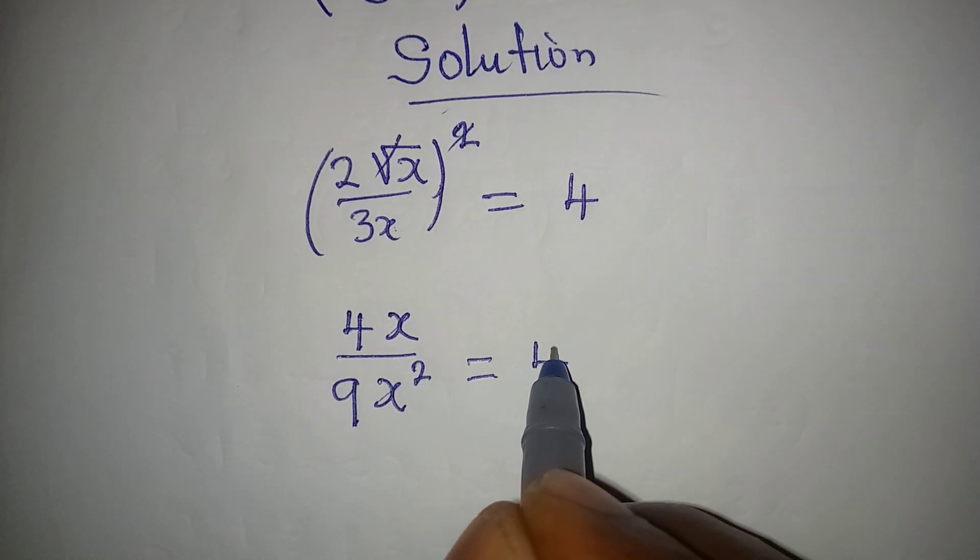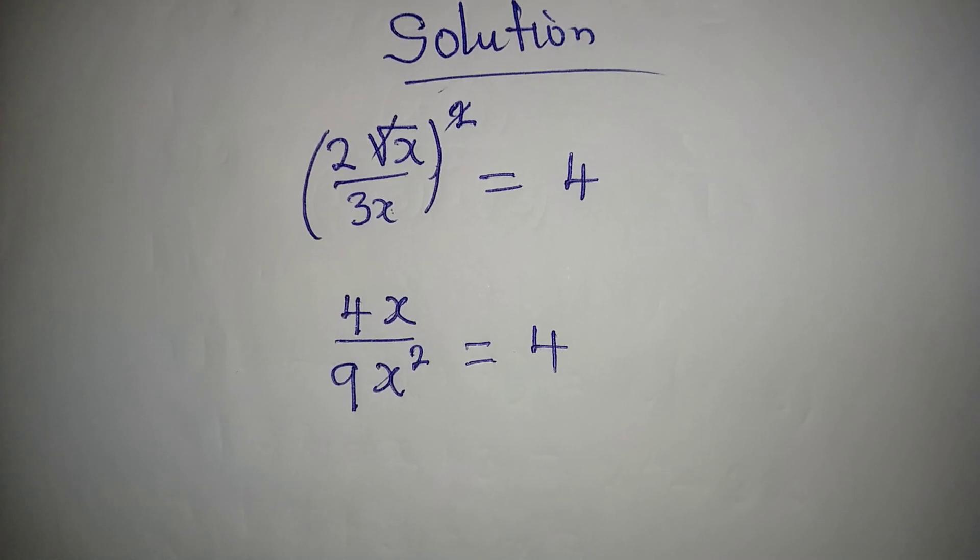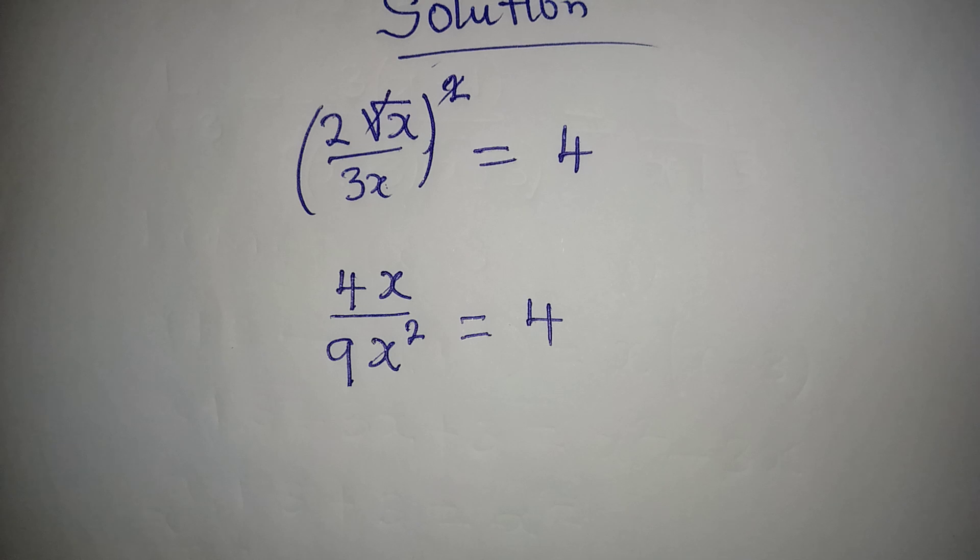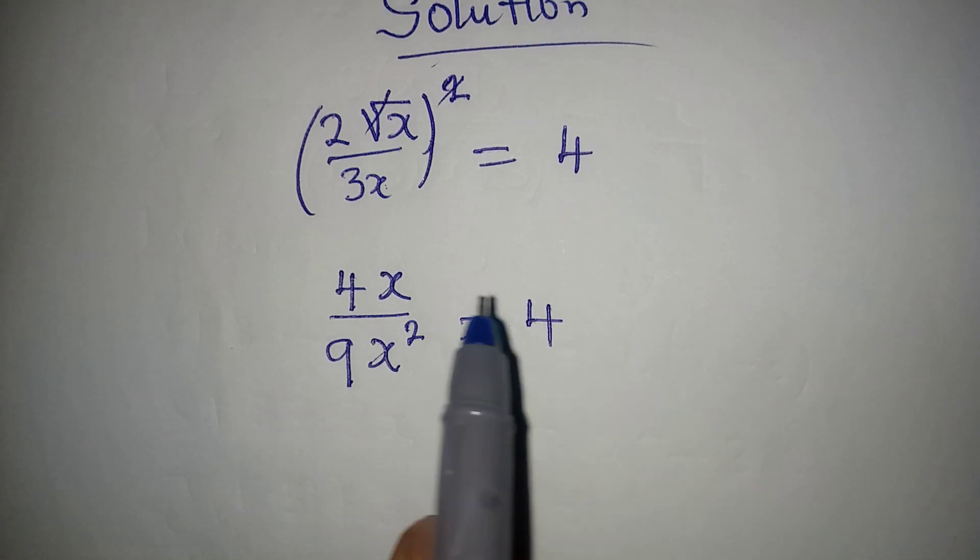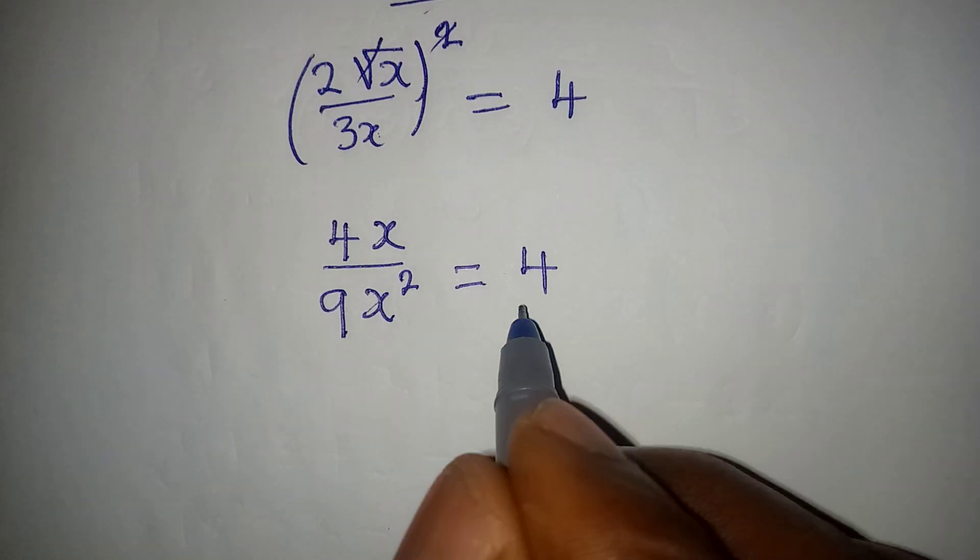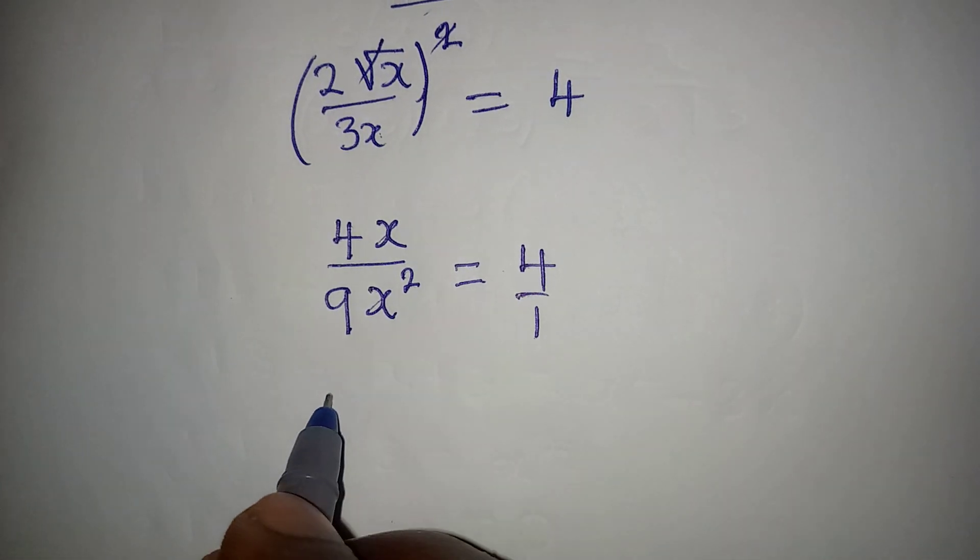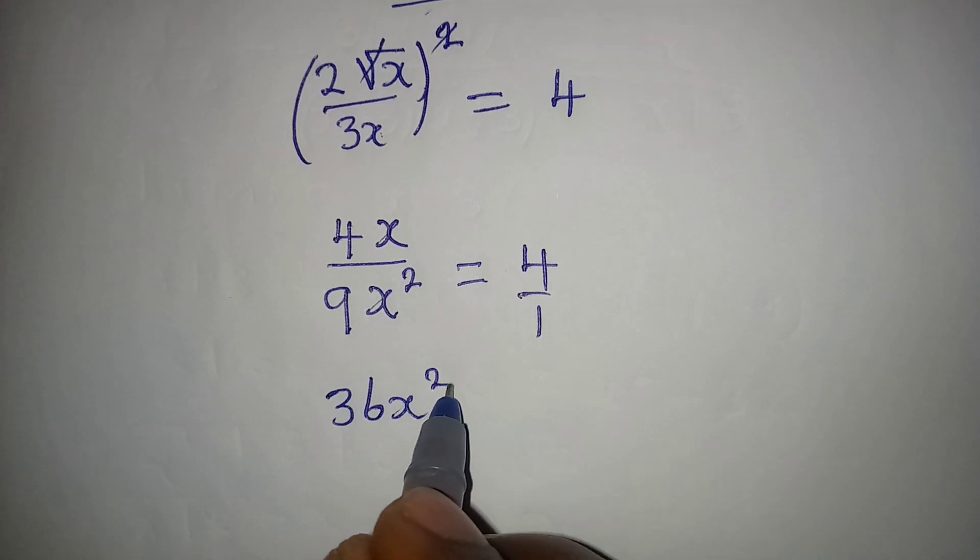From here, do not cancel this and this. What you would do is cross multiply, because this is over 1 as well.